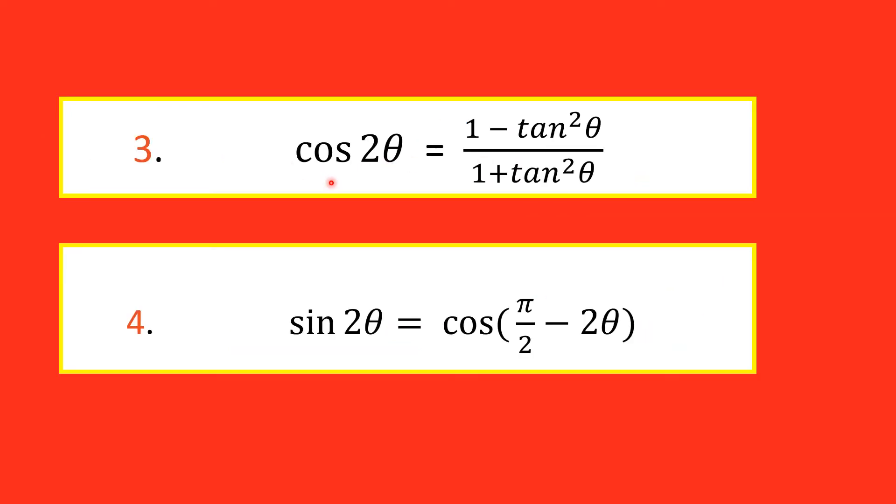Now the third formula is cos 2θ is equal to 1 minus tan square θ upon 1 plus tan square θ. Further, sin 2θ is equal to cos bracket π upon 2 minus 2θ.